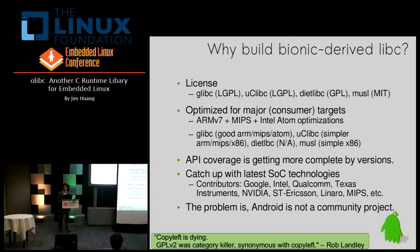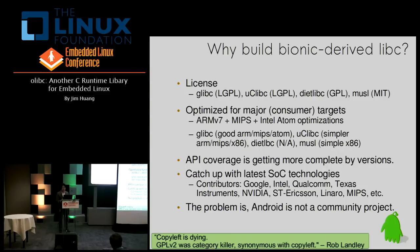So why should we choose Bionic as a base for our new project? The first important factor is license. Comparing existing open source projects: glibc is GPL, uClibc is LGPL, dietlibc is GPL, musl libc is MIT — that's good. If you compare optimization across targets like Lattice on MIPS and Intel, you can see glibc does optimization pretty well, uClibc does simple optimization, dietlibc does nothing, and musl libc only does simple inter-architecture optimization, mainly in mathematics.